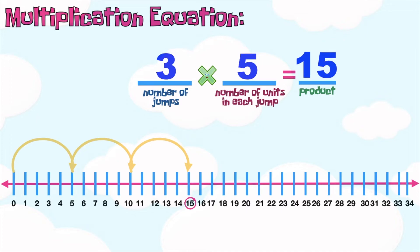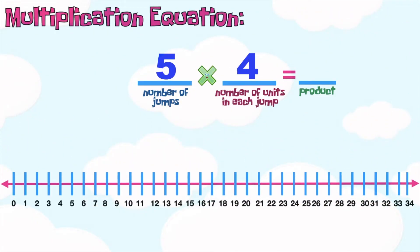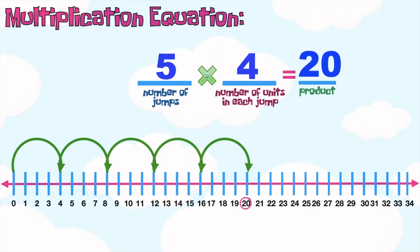How about if we have this? Five times four is equal to blank. Let's use the number line to find the product. Again, the first jump will land at four. We will keep counting by four until we reach the fifth jump: four, eight, twelve, sixteen, twenty. So, that means the product is twenty. We have five times four is equal to twenty.